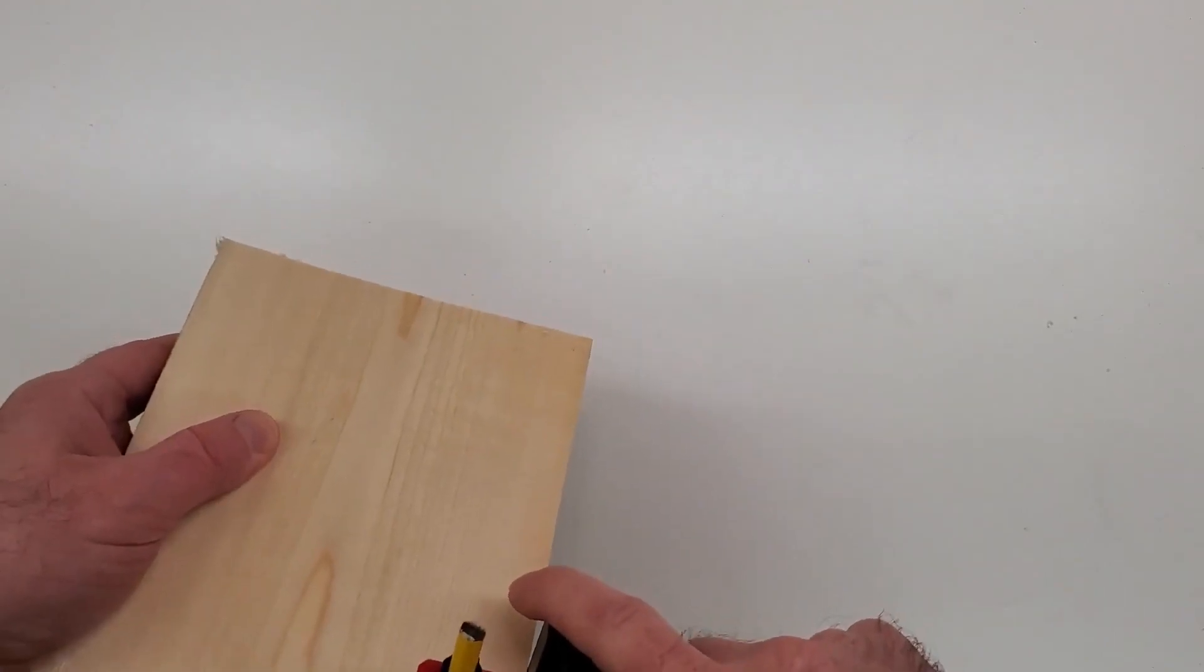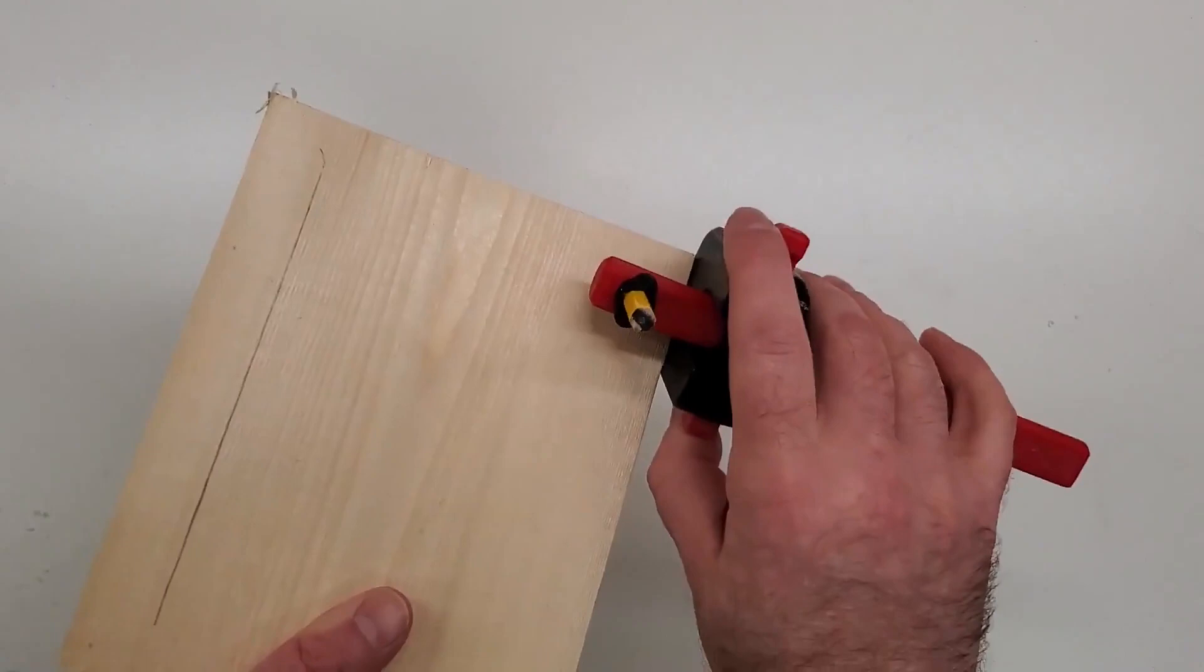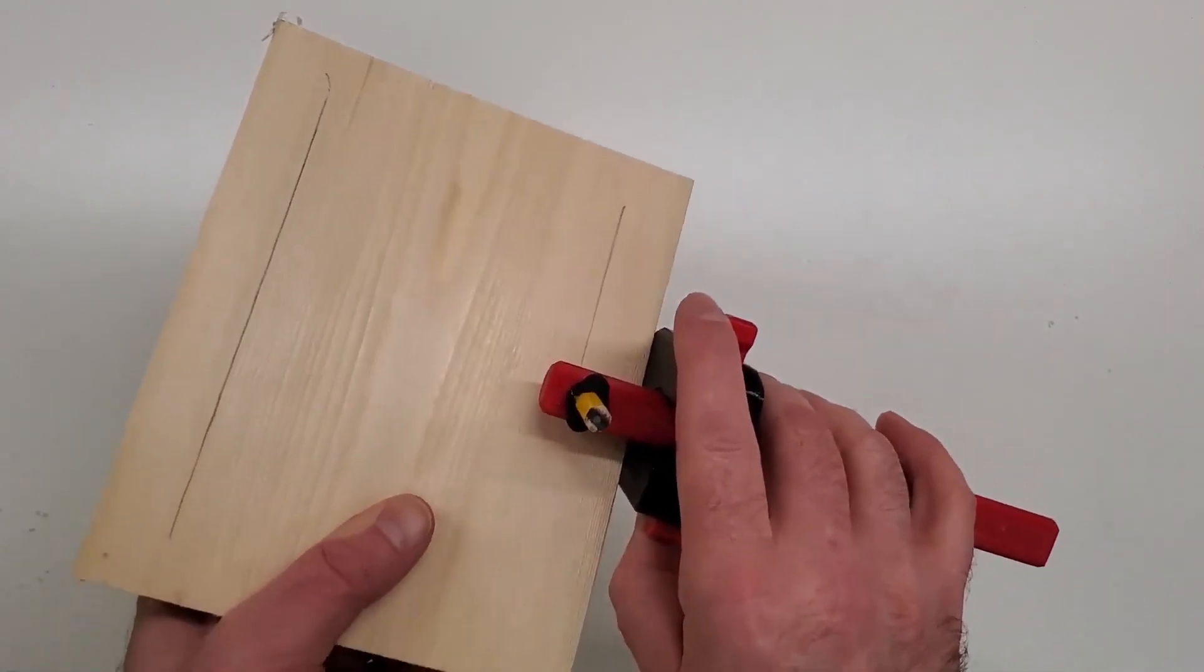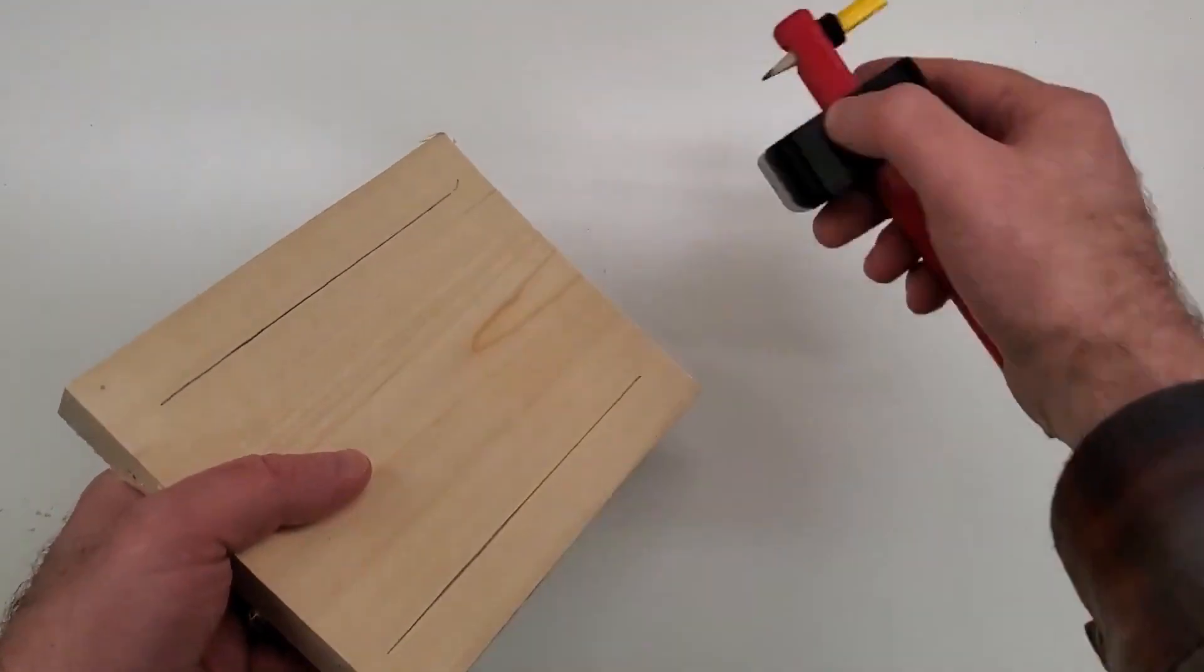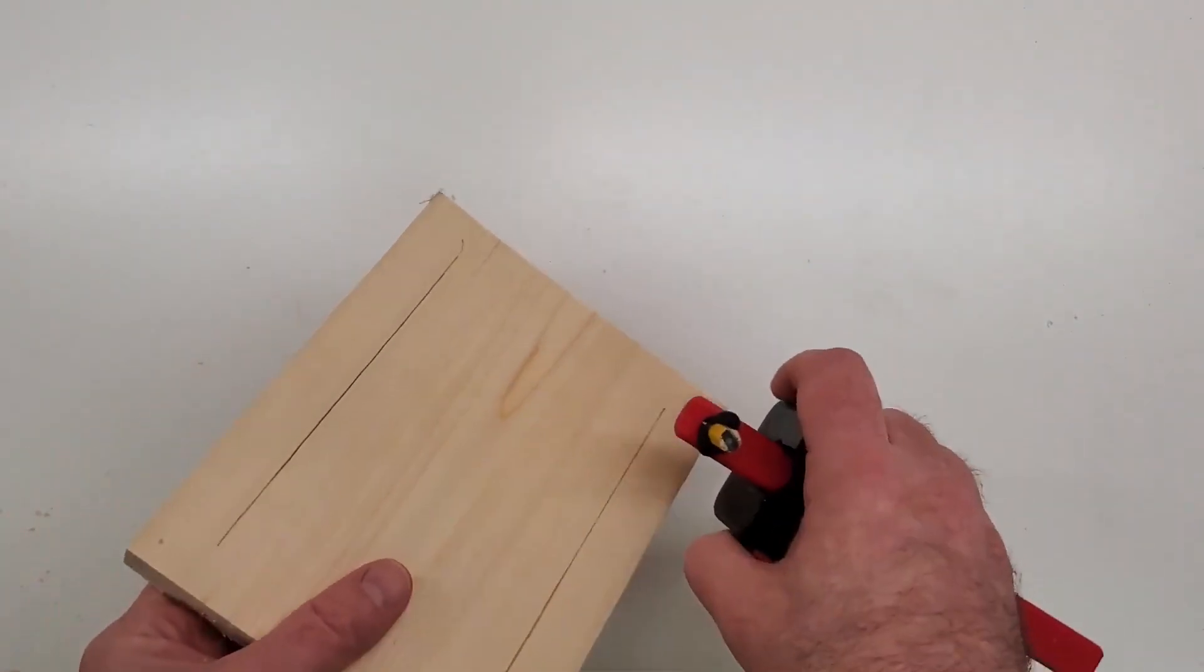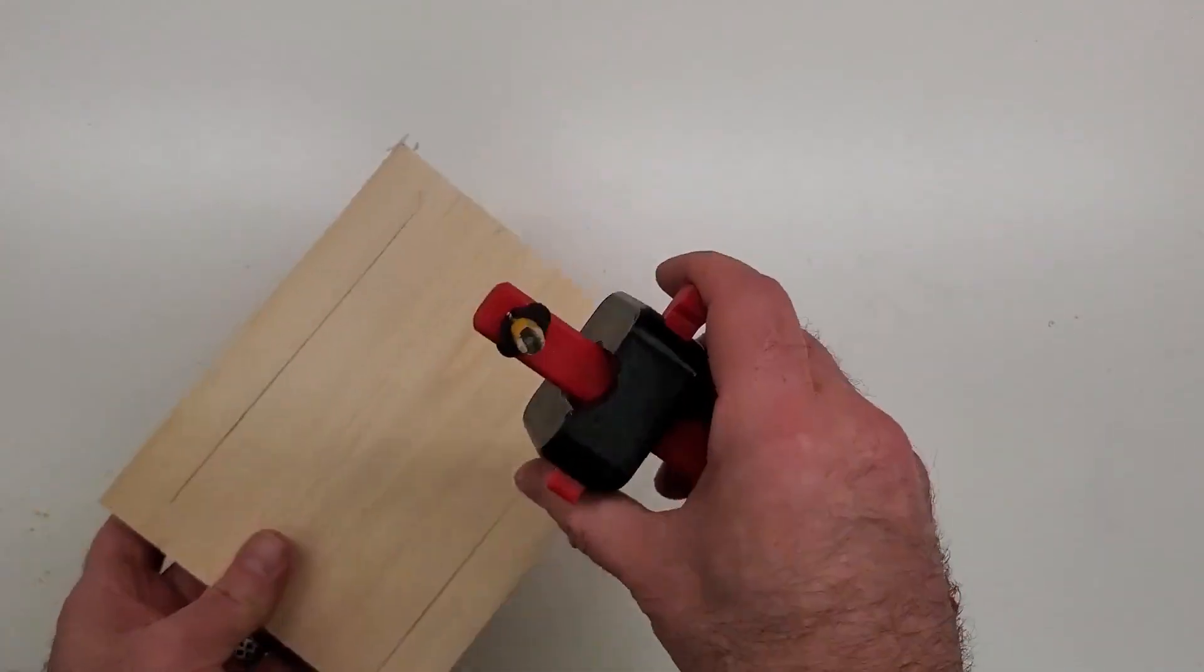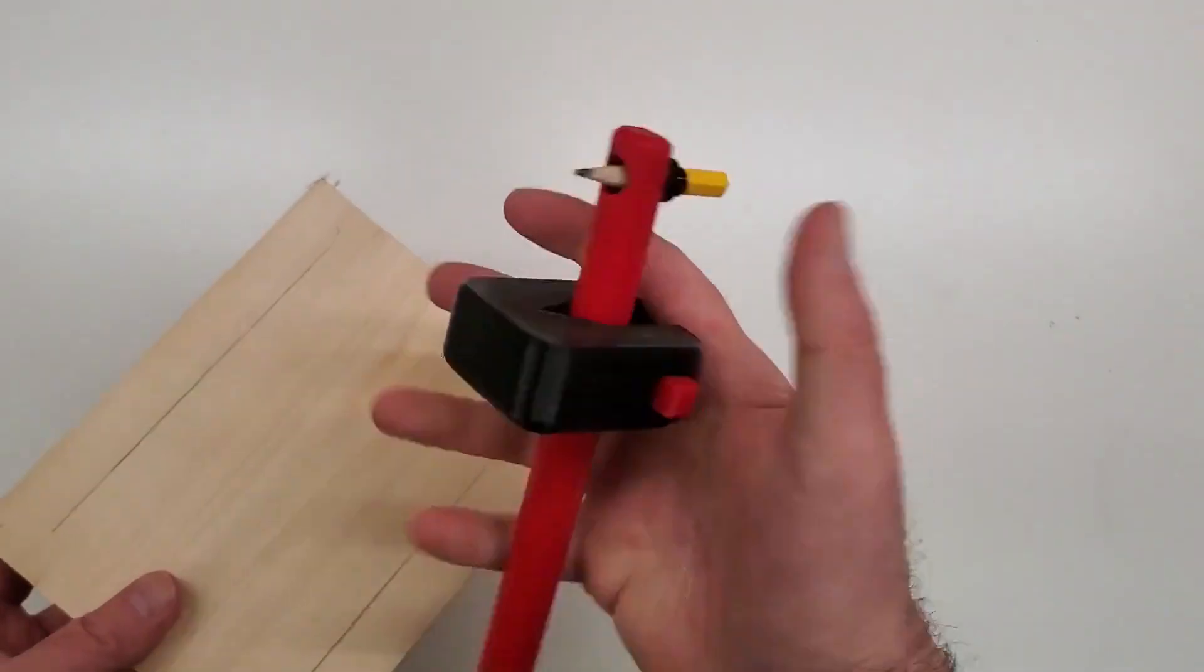And then you can mark your line. I think many people prefer the pull motion for control, but I mean the pencil doesn't want to track and follow the grain nearly as badly as the blade style cutters do. So makes it fairly straightforward anyway. And then release, one-handed operation, very convenient.